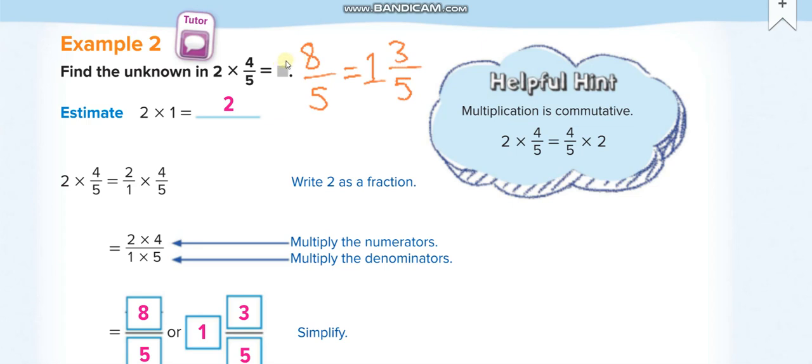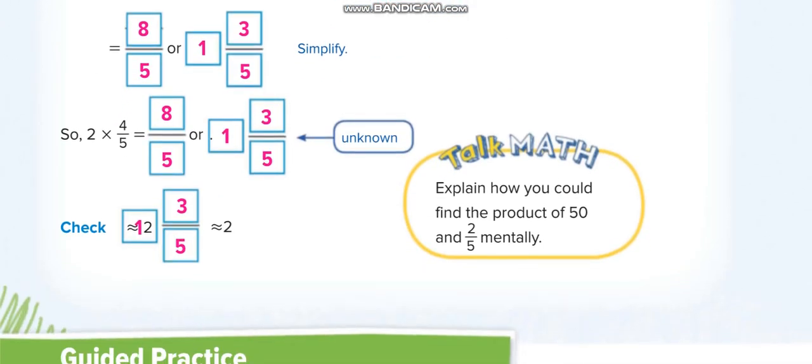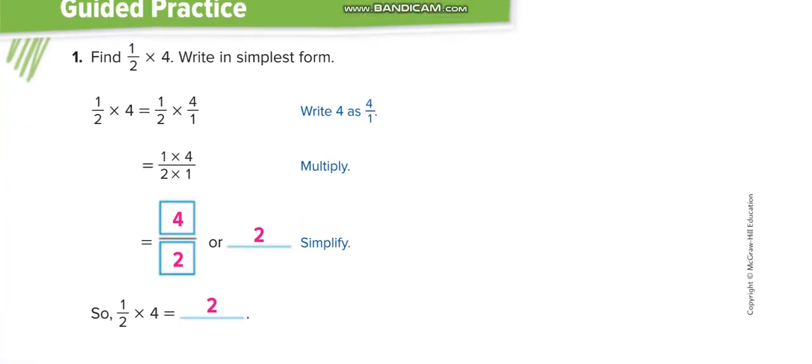8 over 5. How many 5s we can take out of 8? Just 1 whole 5, 1 complete 5 we can take out of it. The second 5 we cannot take out because it will be 10 and we just have 8. So 1 whole. If you take out 5 of 8, remainder is 3 over 5. So 8 over 5 is equal to 1 whole 3 over 5. This is the way we simplify.